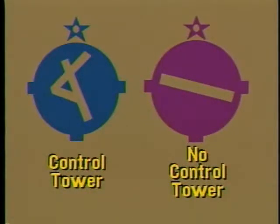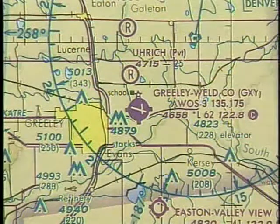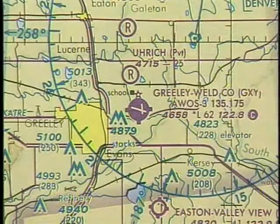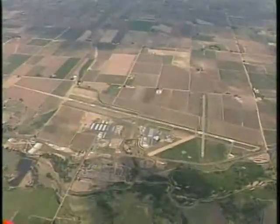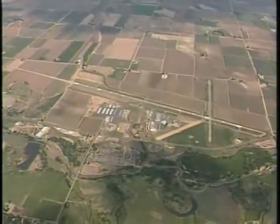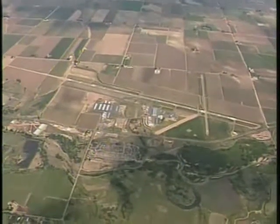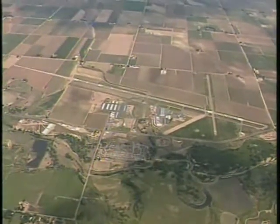A blue symbol indicates an airport with a control tower, while a magenta colored symbol shows an airport without a tower. Airport symbols are shown in a variety of shapes. Runway diagrams shown inside a colored circle indicate the runways are hard surfaced and range in length from 1,500 to 8,069 feet.